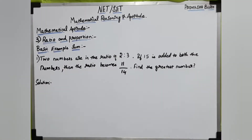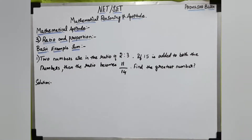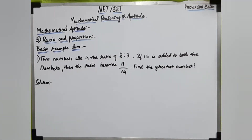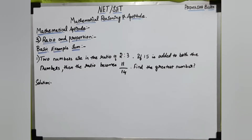Two numbers are in the ratio of 2 is to 3. If 15 is added to both the numbers, then the ratio becomes 11 divided by 14. Find the greatest number.